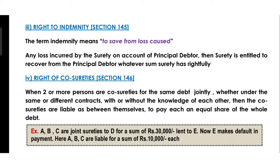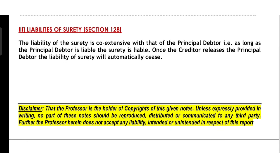Right number four is the right of co-sureties, which means if two or more people have joined as co-sureties for one loan amount, and each surety has guaranteed an equal amount, then every surety is liable for their respective share of the guarantee amount, and not the whole loan amount.